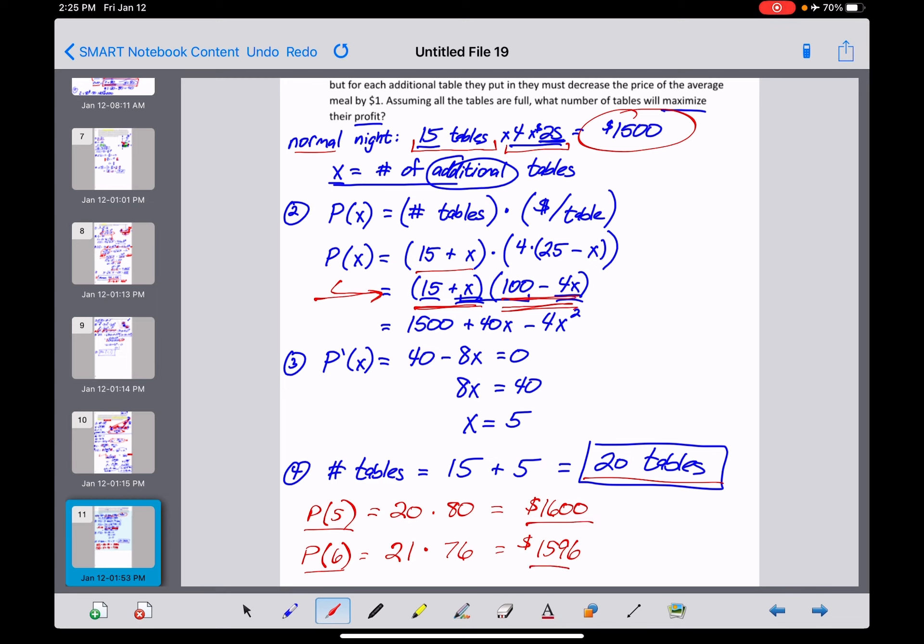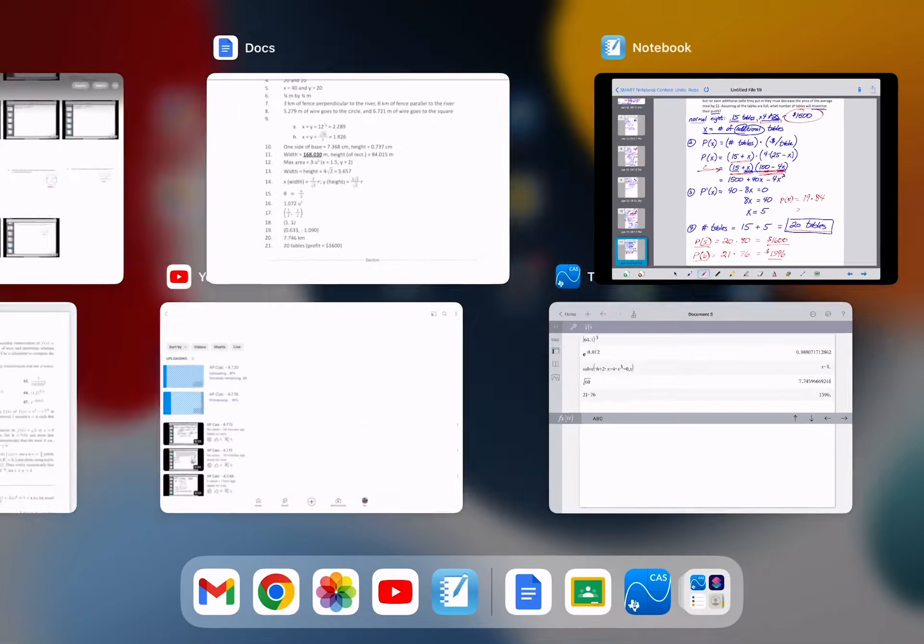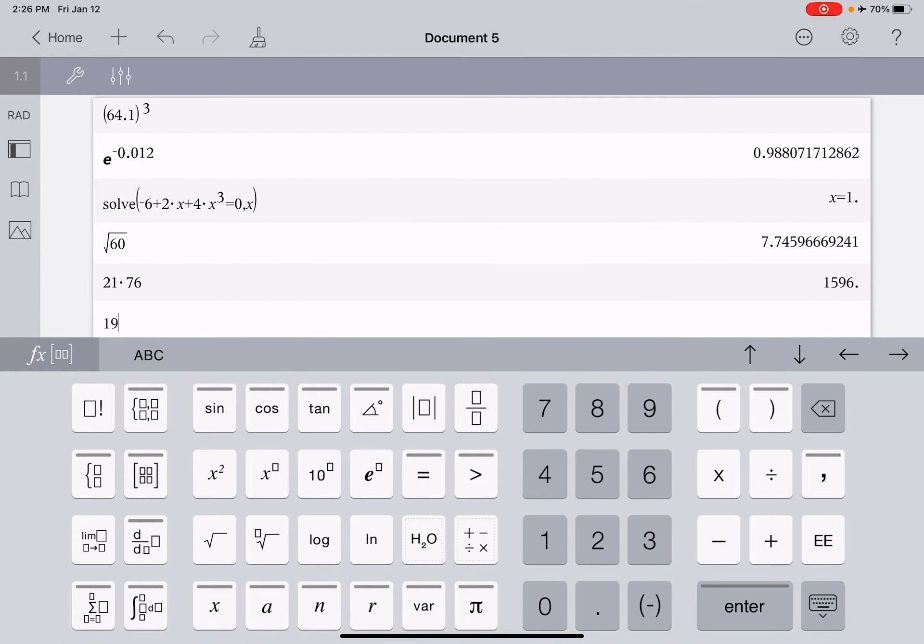I think it would be reasonable to assume then that putting in 7 or 8 or 9 additional tables would lower the profit even further. And I guess if I want to be thorough, I could probably also check P of 4, which is a little bit less than 5. Let's see what that does for us. That means that we're going to have 19 tables out there on the floor. But we're going to make 100 minus 16. We're going to make $84 per table. And what does 19 times 84 do for us? Let's find out. 19 times 84.